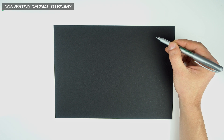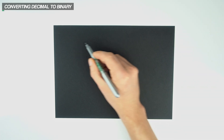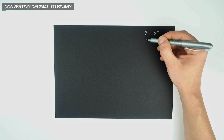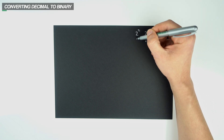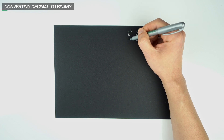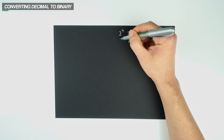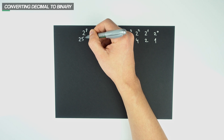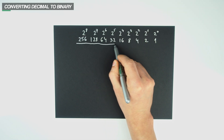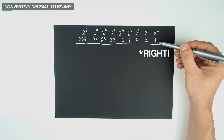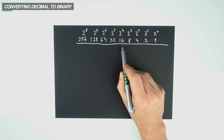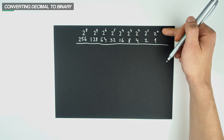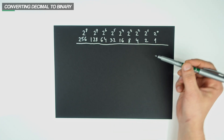We'll first write out a simple table with some place values, moving from the right to the left. We start off with 2 to the power of 0, which is 1, then 2 to the power of 1, which is 2, 2 to the power of 2 which is 4, 2 to the power of 3 which is 8, 2 to the power of 4 which is 16, and we'll only go up to 2 to the power of 8, which equates to 256. You probably noticed a pattern: we started with 1 and continued by multiplying by 2. Place values in the binary system increase by a factor of 2.